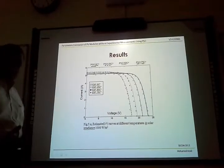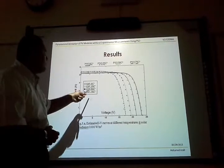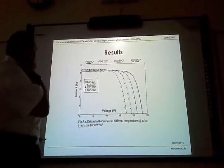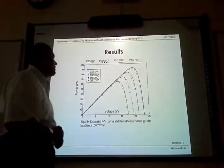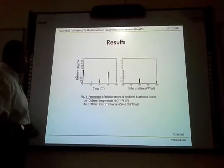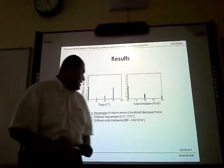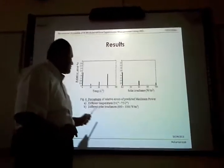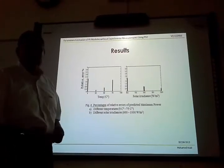We repeated the study again for temperature for different values from 0, 25, 50, and 75 degrees Celsius. The family of curves of power and voltage are also obtained. Regarding the percentage of relative error of predicted maximum power at different temperatures and at different solar irradiance, we have observed that the error didn't exceed 2 percent.